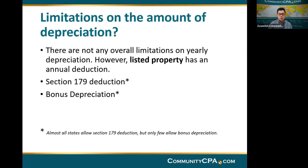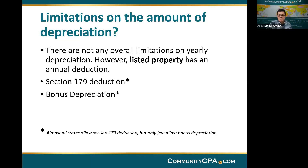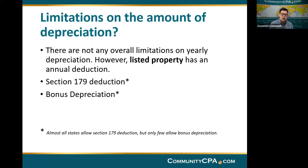Listed properties have special limitations. But if you have something that is 100% for business use, there is no limitation. However, there are two special items: Section 179 and bonus depreciation, both of which have limitations. Section 179 is technically not depreciation but a deduction of the asset — an exception to the rule that allows you to deduct 100% of an asset you buy, but with some limitations.